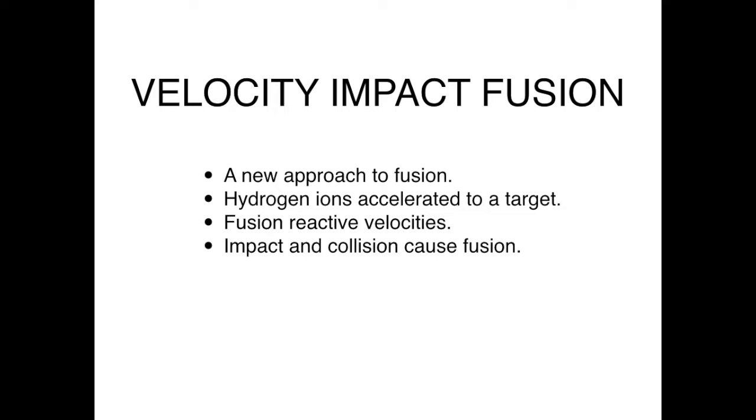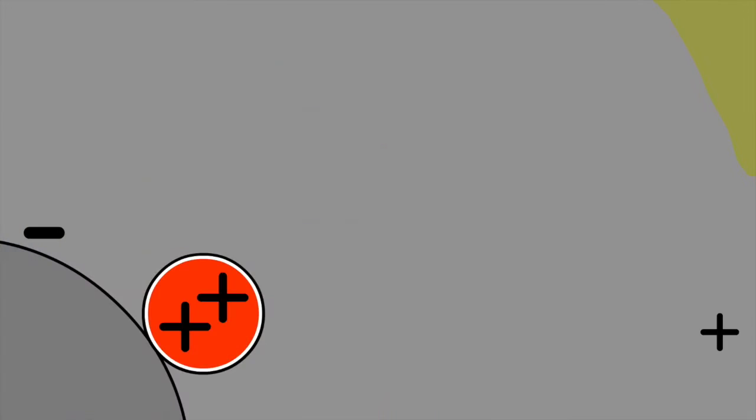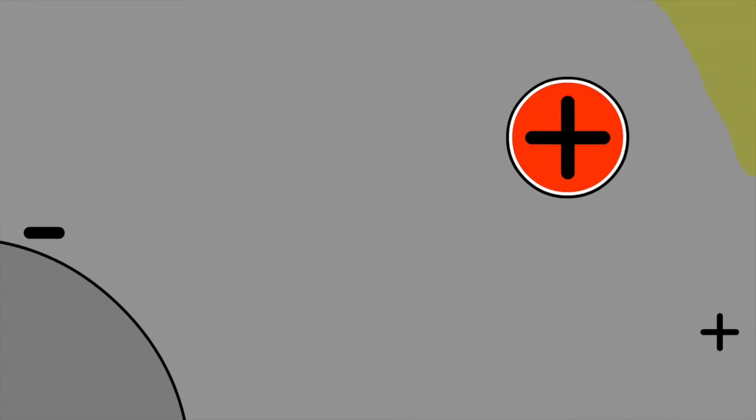Velocity impact fusion is a new approach to fusion. Hydrogen ions are accelerated to a target at fusion reactive velocities. Ongoing impact and collision at the target produce fusion reactions.